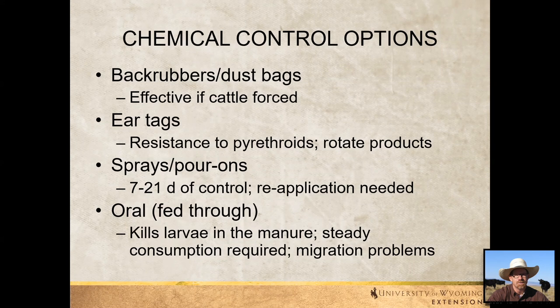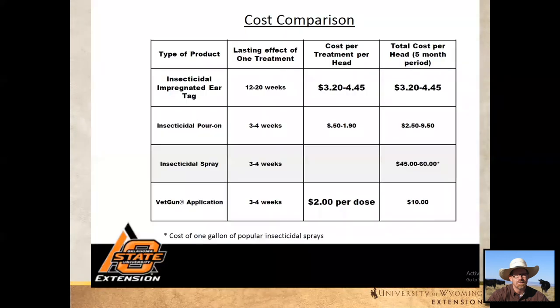Oral or fed-through products typically kill the larvae in the manure, and steady consumption is required for them to be effective. Here's a cost comparison from a colleague at Oklahoma State. You can see ear tags, pour-ons, sprays, and the vet gun application, along with how long the treatment lasts — ear tags 12 to 20 weeks, pour-ons and sprays maybe three to four weeks. Looking at total cost per head over the horn fly season, ear tags and some pour-ons may be among the cheaper options.